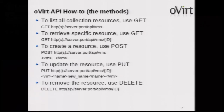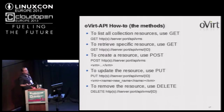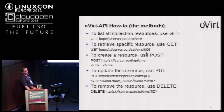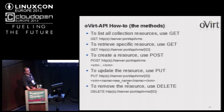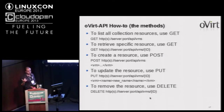To list VMs, do a GET on the VMs collection. To get a specific one, use HTTP GET with a specific ID. Create a new VM using POST with the VM details. Update — for example rename — the VM by passing the new name. And to delete it, use HTTP DELETE with the resource URI.